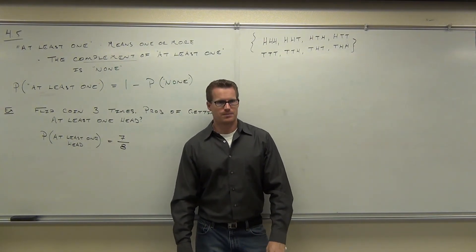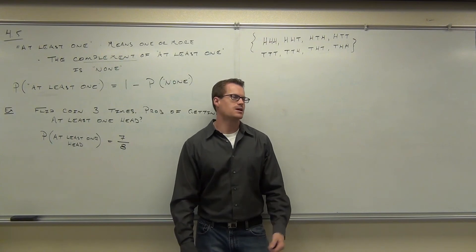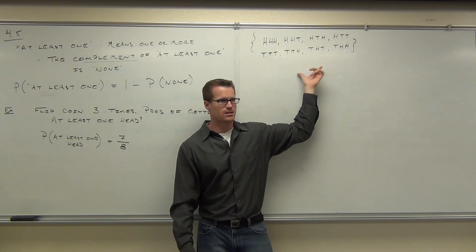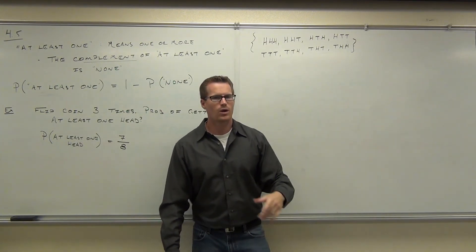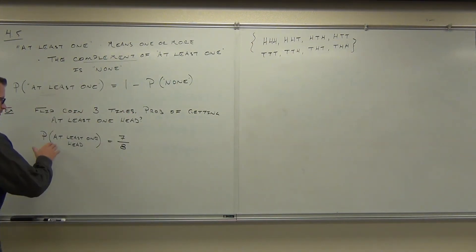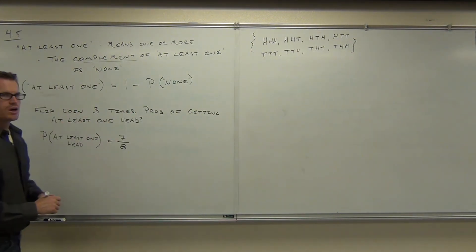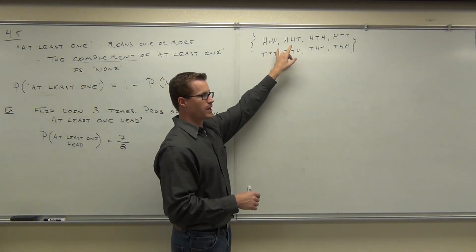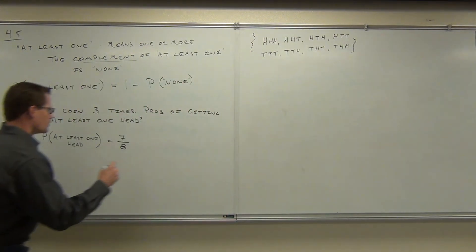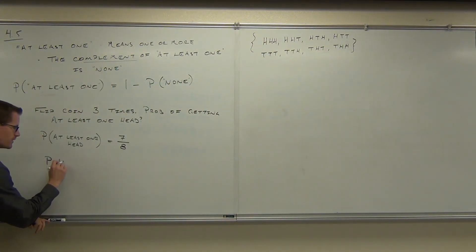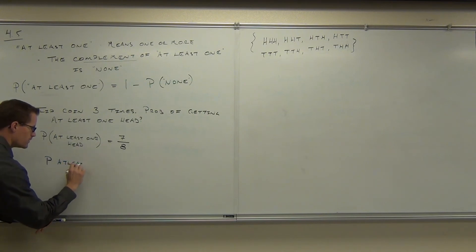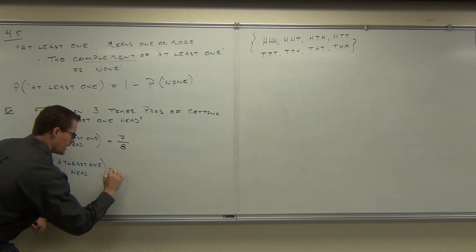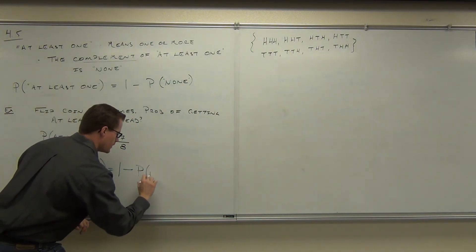Now, is there a different way to do it? Yes, there's a different way because this way is pretty taxing — it takes a long time in some situations. What if there's a different way? Instead of thinking about this directly — the probability of at least one head, which is really the probability of all three heads or two heads or one head — what if we thought about it as one minus the probability of none?